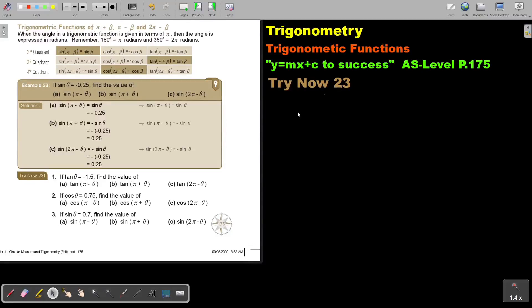In this video, we will continue with trigonometric functions, but now we will just look at the radian ones. So it's pi plus beta, pi minus beta, or 2 pi minus beta in the second, third, and fourth quadrant. You will find this on page 175 in the Namibia AS-level mathematics textbook, y equals mx plus c to success.